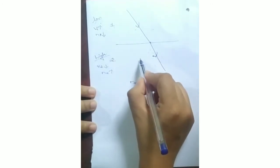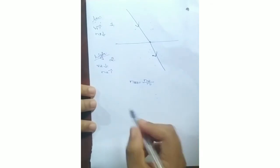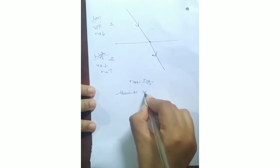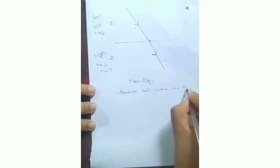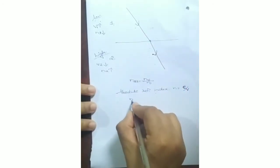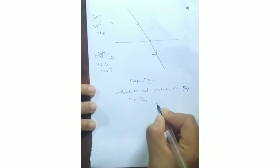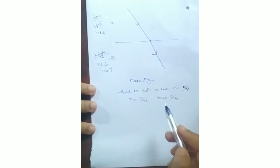Here N2 is the refractive index of the second medium with respect to air, and N1 is the refractive index of the first medium with respect to air. When we compare the refractive index of a medium with respect to air, that is known as the absolute refractive index. The absolute refractive index of any medium is N = C/V, where C is the velocity of light in air and V is the velocity of light in that medium. So N1 = C/V1 and N2 = C/V2.